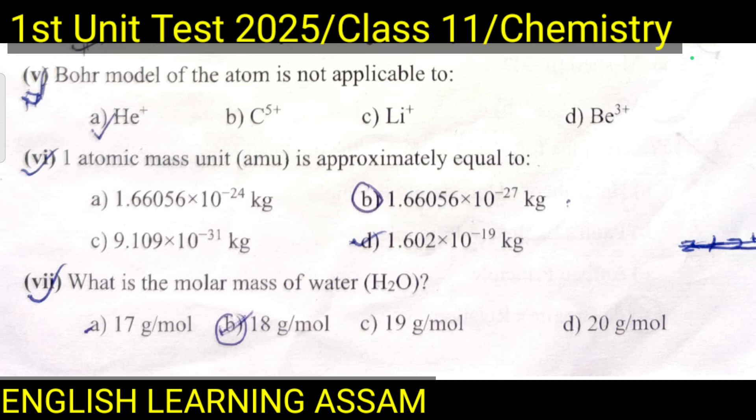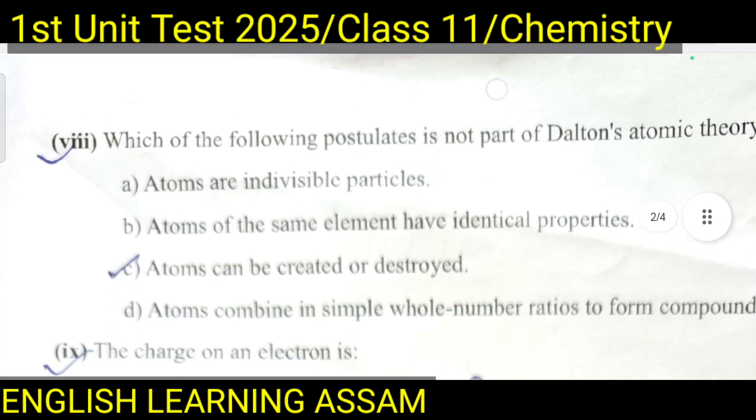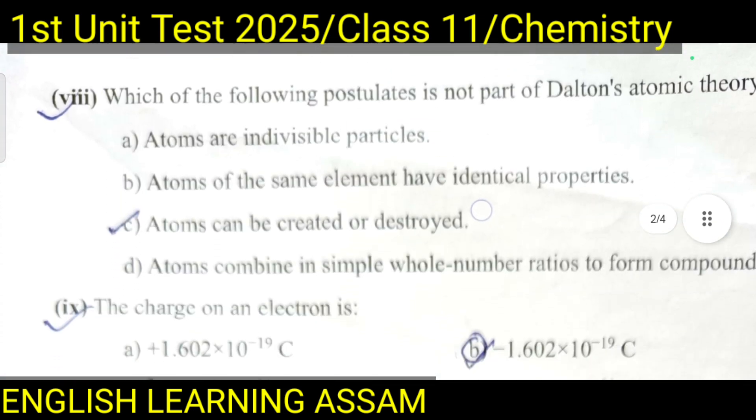The correct option is B: 18 gram per mole. Now come to question number eight.